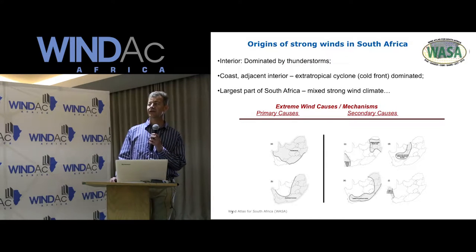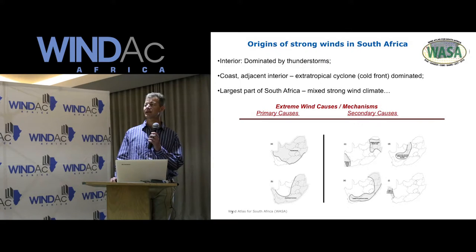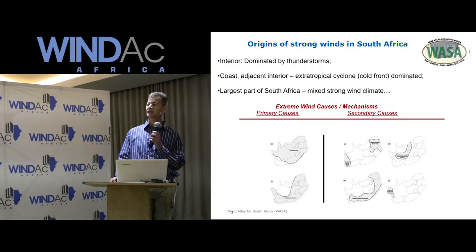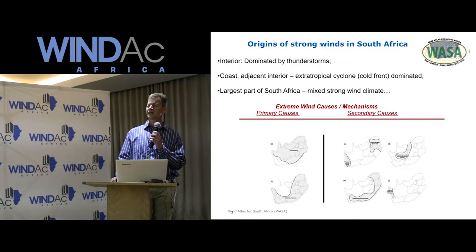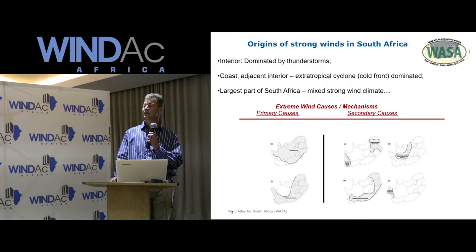Looking at the origins of the strong winds in South Africa, we know that the interior strong winds are dominated by thunderstorms. On those maps, on the left-hand side, the primary causes — the grey area is where South Africa is dominated by thunderstorms. The map just underneath shows the strong influence of extra-tropical cyclones or cold fronts.